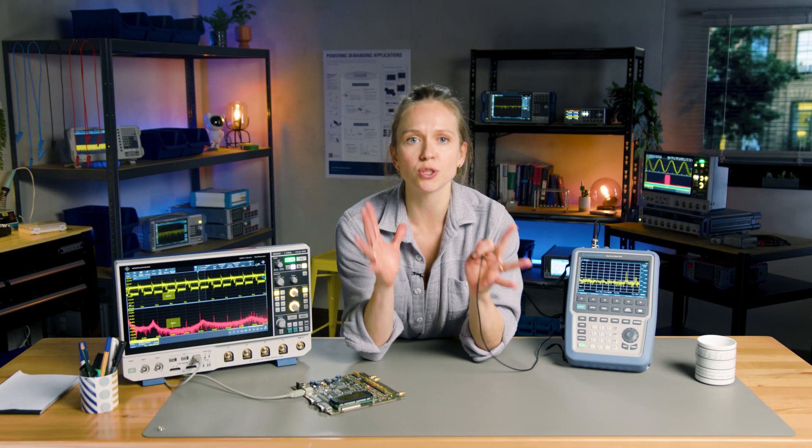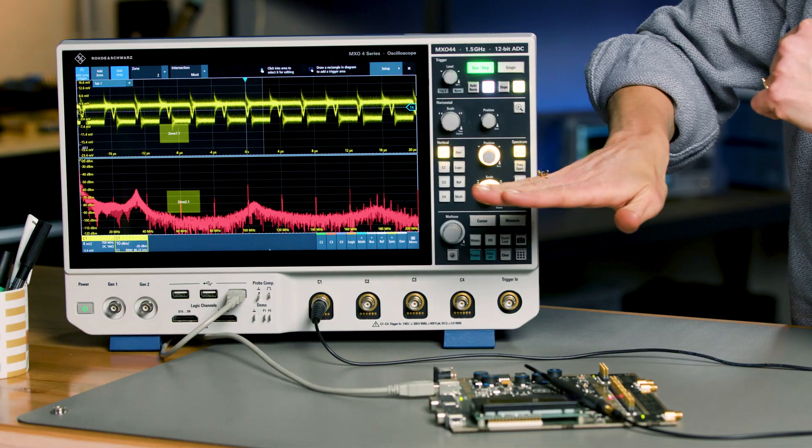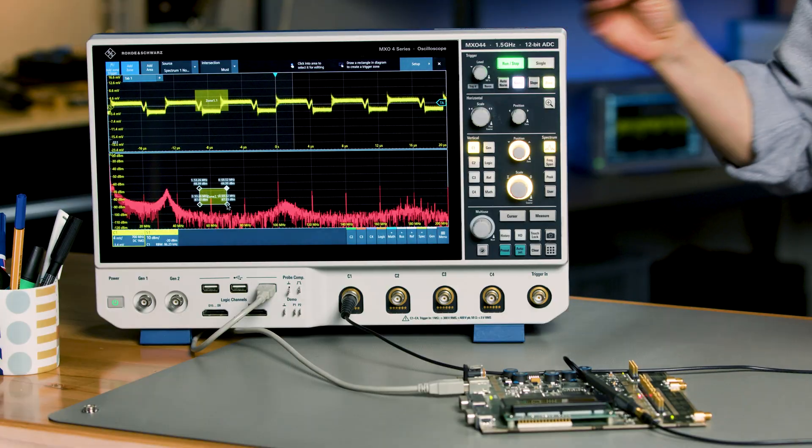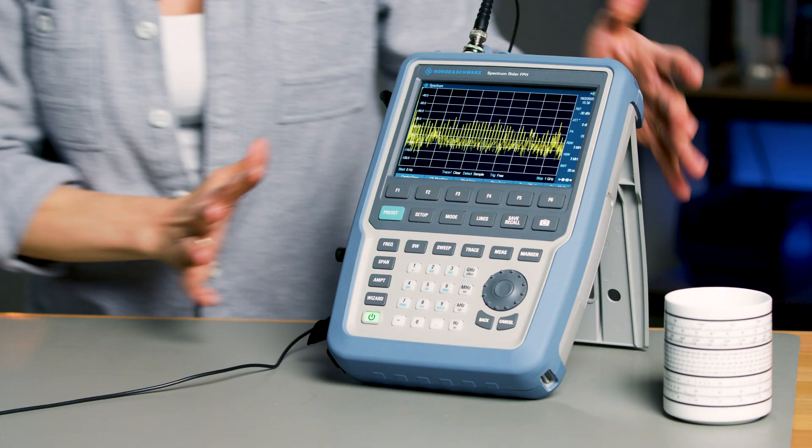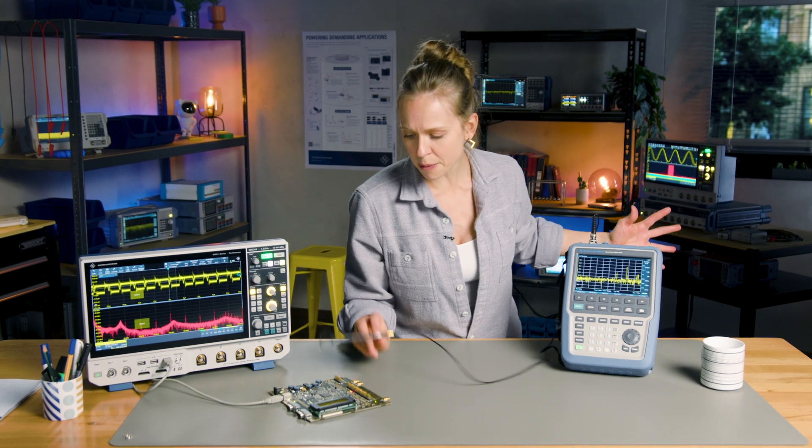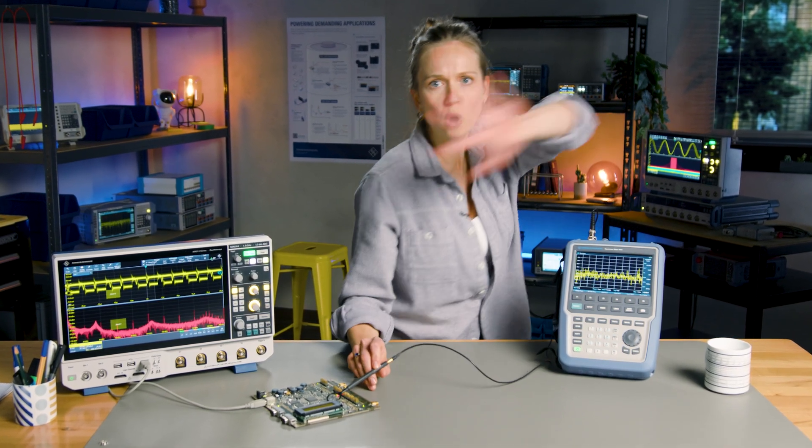Which tool should you choose? It depends on your debugging approach. The MXO4 is ideal for getting insights across the time and frequency domain during debugging. The FPH, on the other hand, shines when identifying unknown EMI sources across a broad frequency range and performing pre-compliance tests against EMI standards.